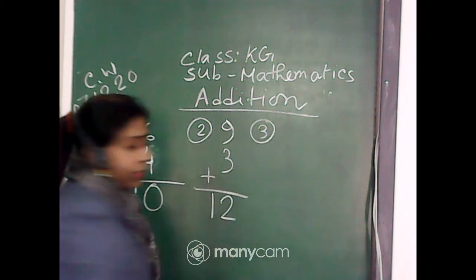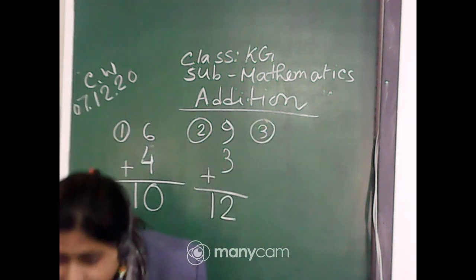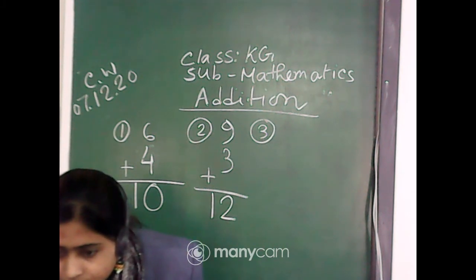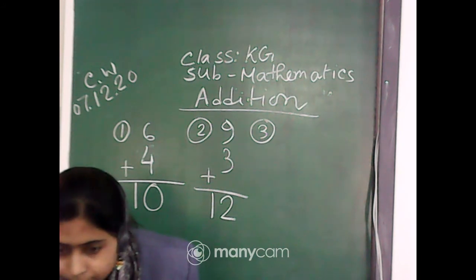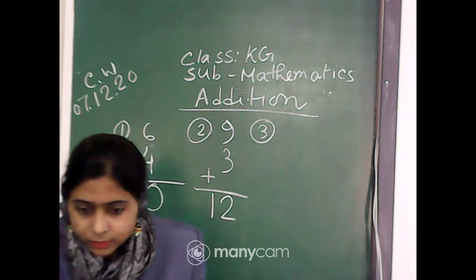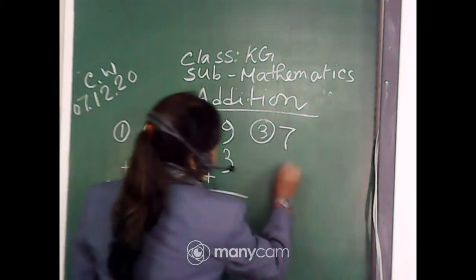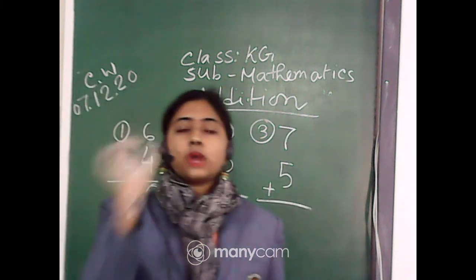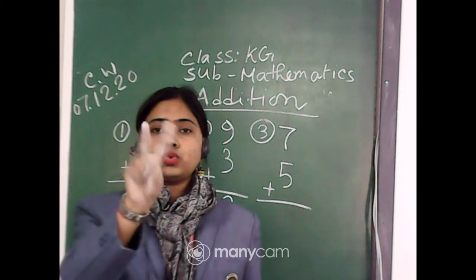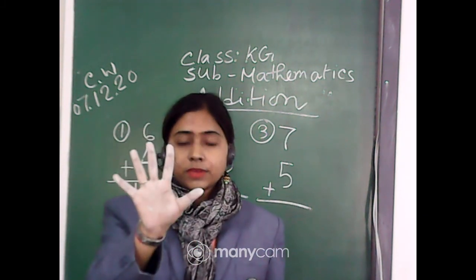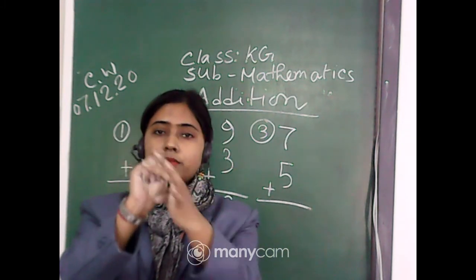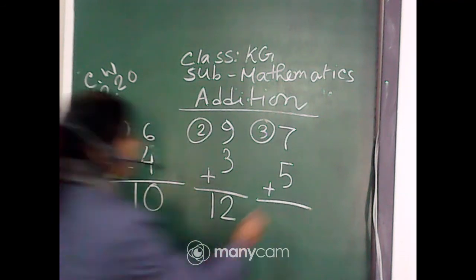Number 3: 7 plus 5. Which one is the small number? 5. I am showing my right hand with 5 fingers: 1, 2, 3, 4, 5. And 7 after 5 fingers: 8, 9, 10, 11, 12. So, 7 plus 5 is equal to 12.